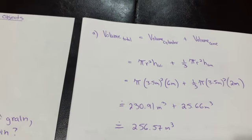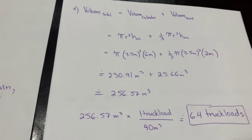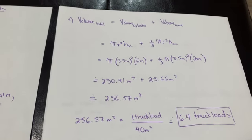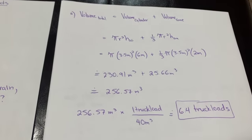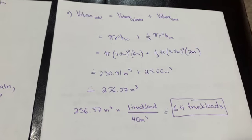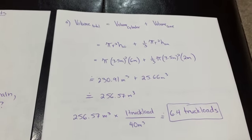Remember that we were actually asked about truckloads of grain. So we do have a step further than that, and that is to say, well, each one truckload of grain contains 40 cubic meters. So 256.57 divided by 40. And we can fit about 6.4 truckloads into that granary. So certainly not seven, six complete truckloads and then a bit more.